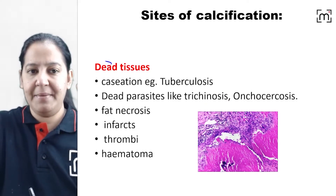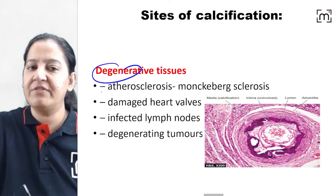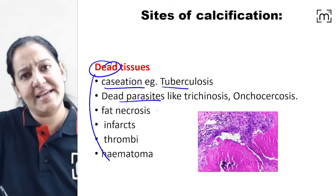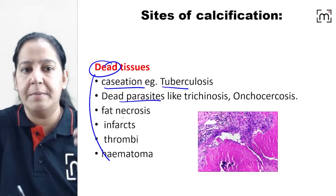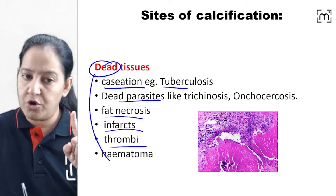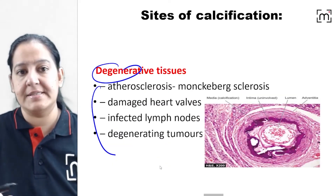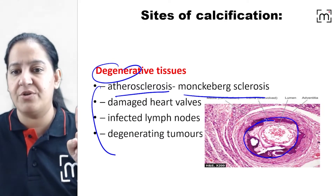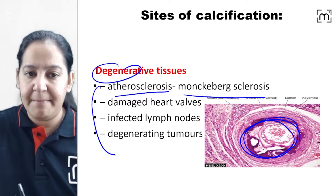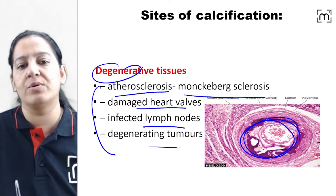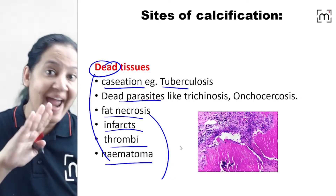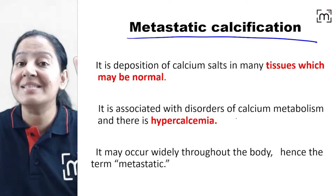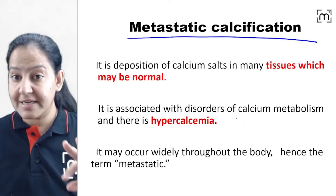The sites of dystrophic calcification include examples of dead tissue: caseous necrosis in TB, dead parasites in the body, fat necrosis, thrombi, hematoma, coagulative necrosis. Examples of degenerated tissue include atherosclerosis, Mönckeberg's sclerosis in the media of blood vessels, damaged heart walls, infected lymph nodes, and degenerating tumors.